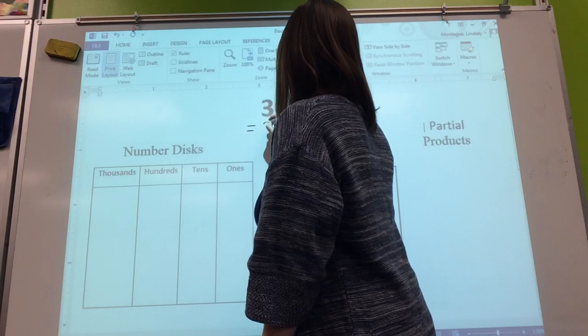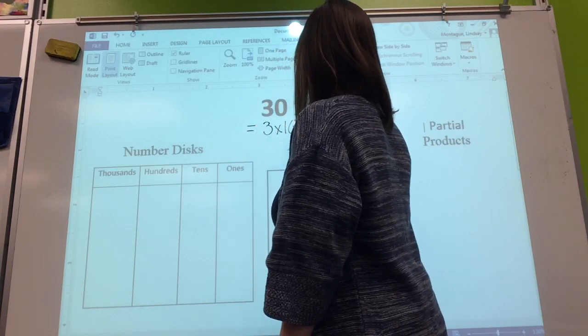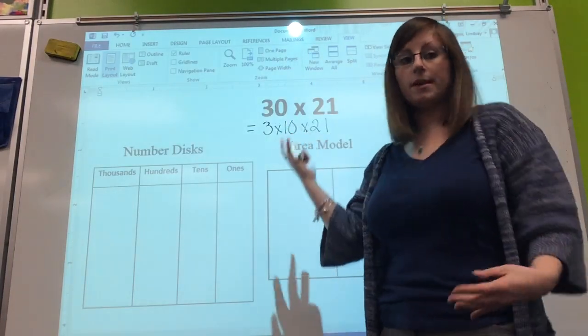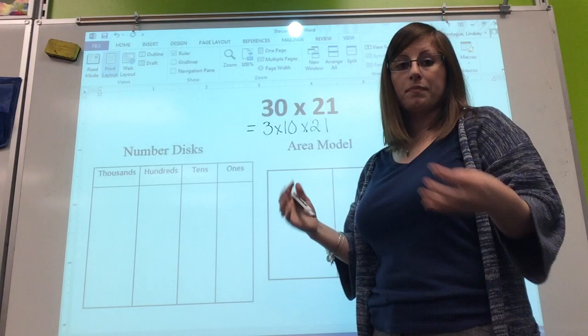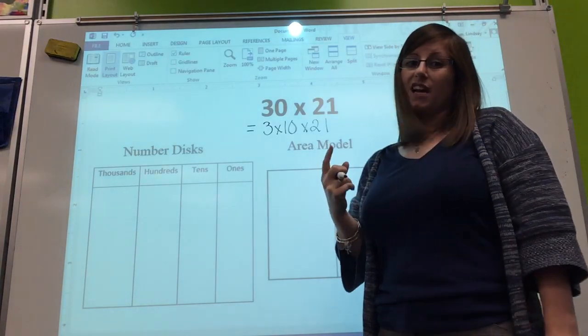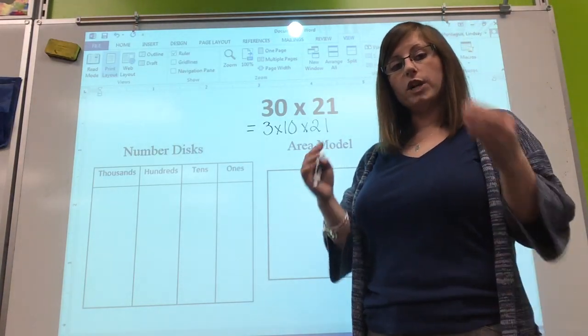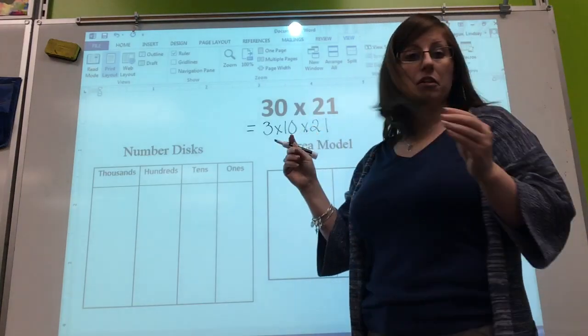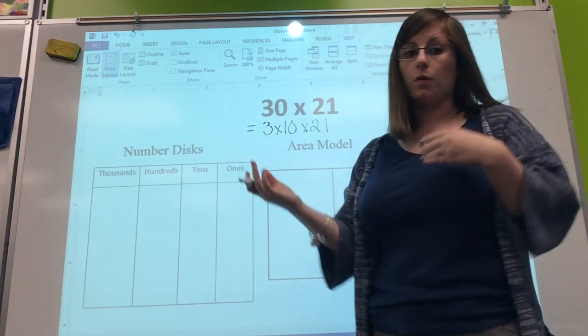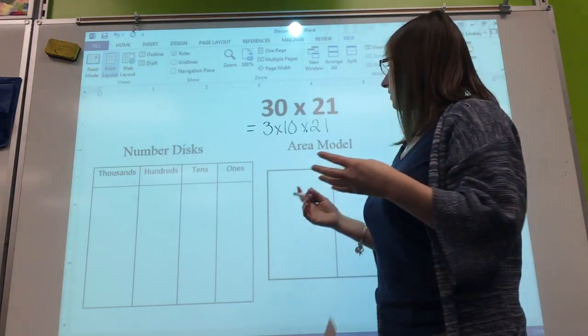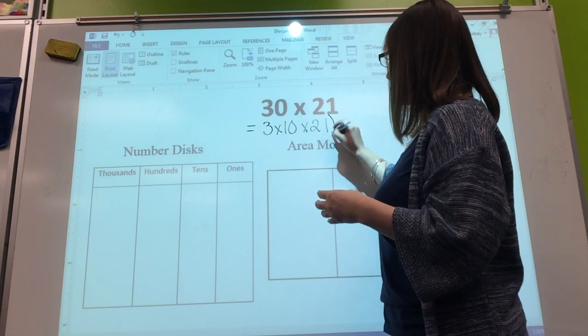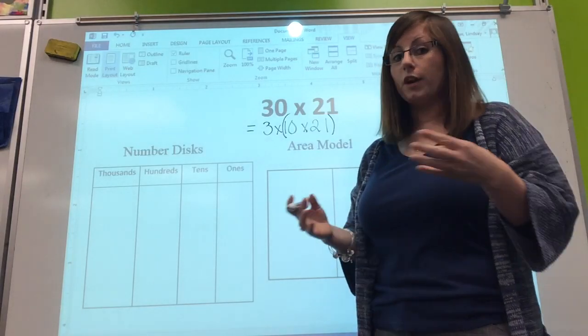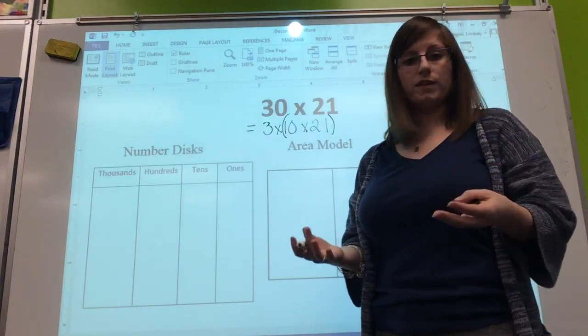So we have 3 times 10, which is 30, times 21. We can switch that around a little bit, and then we decided we're going to use parentheses and decide which one of those things we're going to do first. It doesn't matter - you can do 21 times 3 or 21 times 10. But today we're going to do 21 times 10 first and then multiply it by 3.